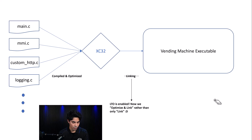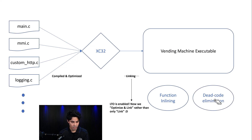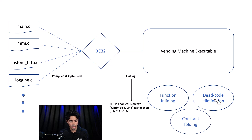For example, we can have functions that get inlined across files to improve runtime performance, and there can also be size optimizations like dead code elimination and constant folding, which can be performed on the program as a whole.